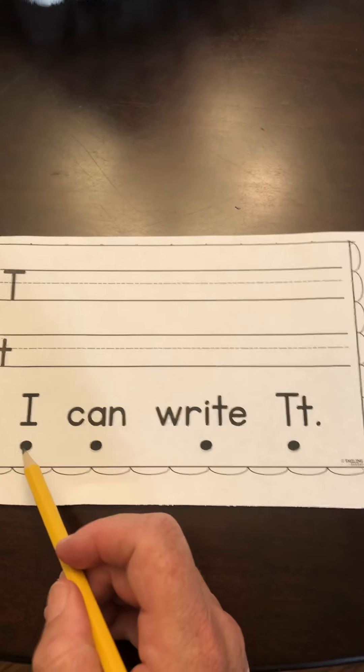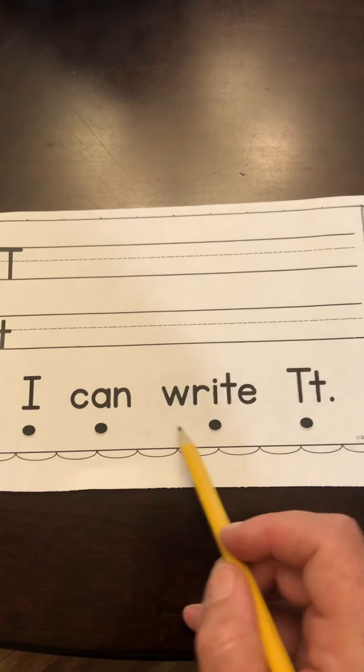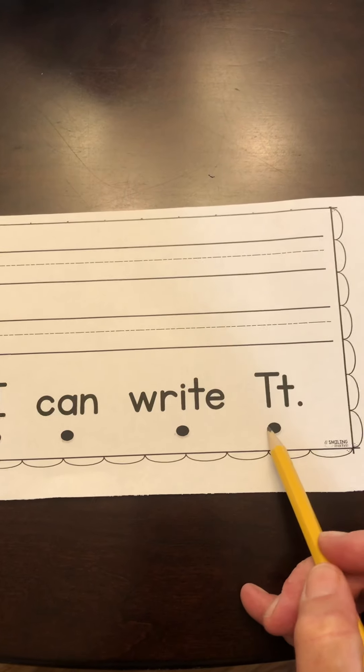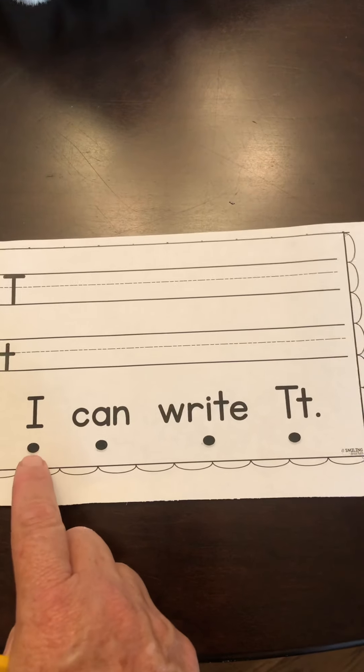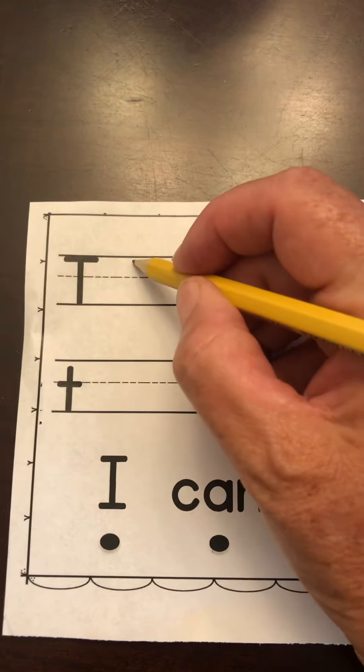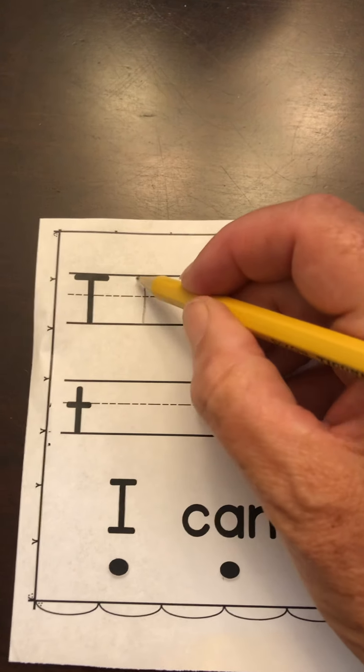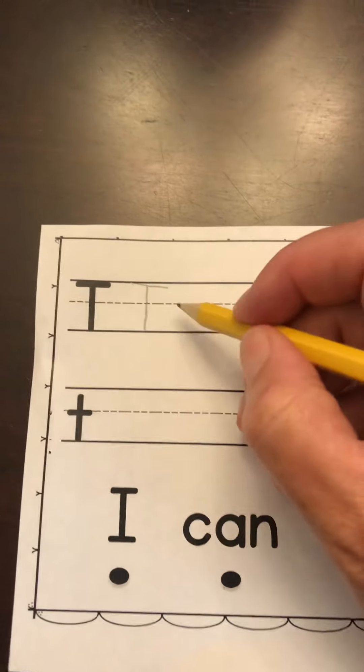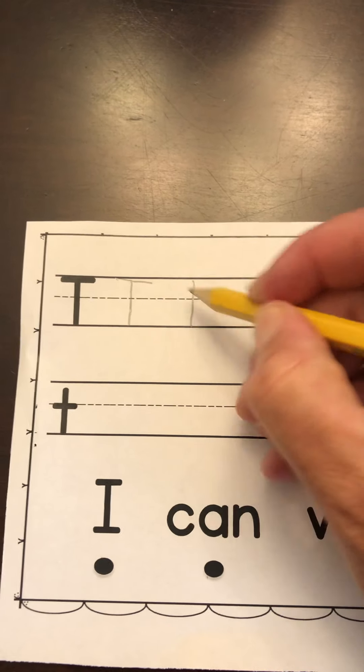Ready to read the sentence? I can write T. Let's try to read it all by yourself. Good job. And then you just have to make some T's. Try to make at least five if you can.